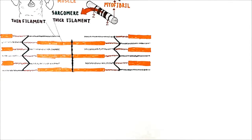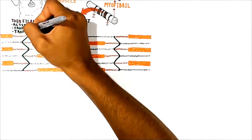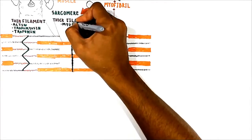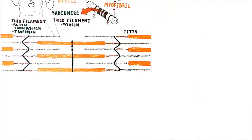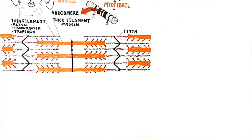Both filaments are composed of different kinds of protein. The proteins of the thin filament are actin, tropomyosin, and troponin. As for the thick filament, the protein is myosin. Myosin is attached to the Z line by another protein known as titin. These are the myosin heads.